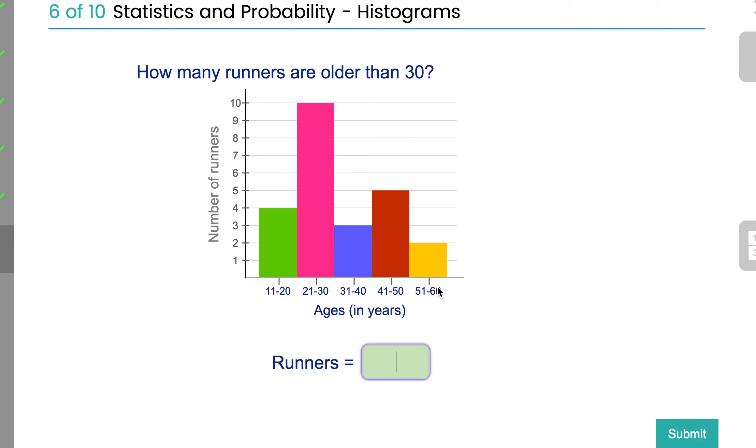And that's histograms basically. They're a bit like bar charts and column charts and those sorts of things, but with ranges rather than specific numbers.